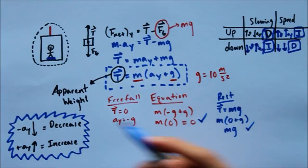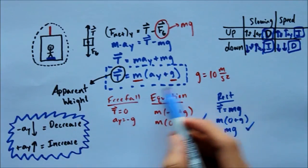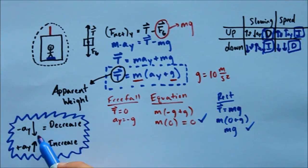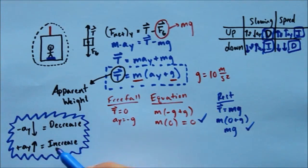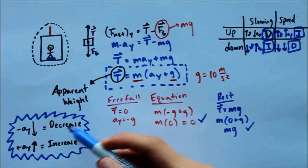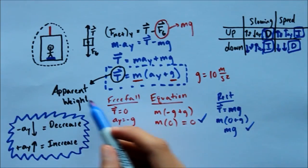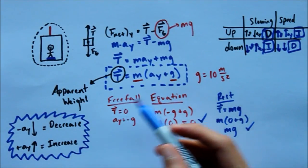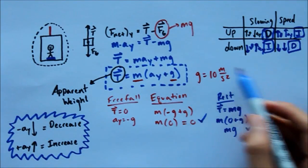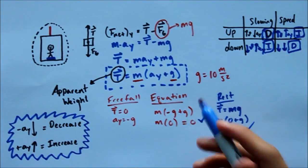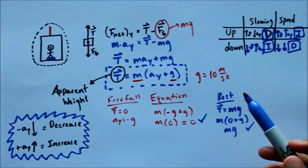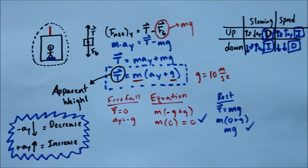So on your test, I would encourage you to use this formula and you'll be able to fill stuff in and get a decrease or increase in apparent weight. Or you can memorize this grid — whichever way works for you. I just displayed three different techniques you could use. Hopefully this helped, and thanks for watching.